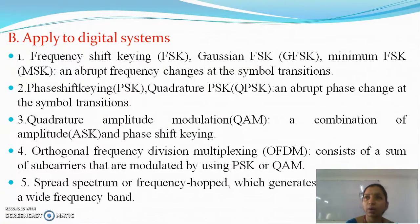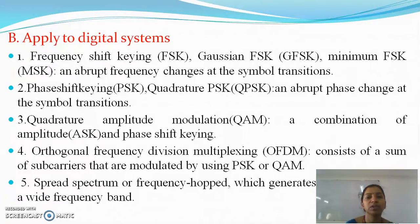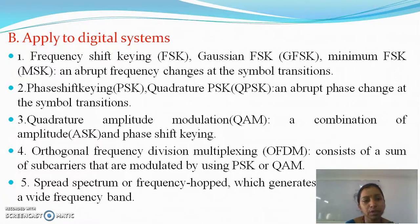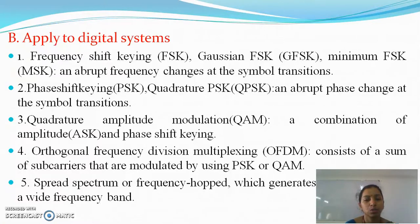When applying to digital systems, the modulation techniques used for increasing spectrum efficiency include: frequency shift keying, Gaussian frequency shift keying, minimum frequency shift keying, and abrupt frequency shift keying with abrupt frequency changes at symbol transitions. Also phase shift keying, which involves abrupt phase changes at symbol transitions; quadrature amplitude modulation, which combines amplitude shift keying and phase shift keying; orthogonal frequency division multiplexing, which consists of sub-carriers modulated using PSK or QAM; and spread spectrum or frequency hopping, which generates many codes for a wide frequency band.